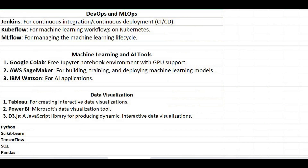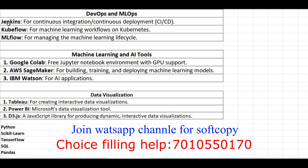These are the academics where you have to score marks. But these are the tools you must learn: for DevOps and ML — Jenkins, Kubeflow, MLflow. For machine learning and AI tools — Google Colab, AWS SageMaker, IBM Watson. For data visualization — Tableau, Power BI, D3. At entry level, you should learn Python, Scikit-Learn, TensorFlow, SQL, and Pandas. With these tools, you can easily grab a job; otherwise, campus placement is very difficult.